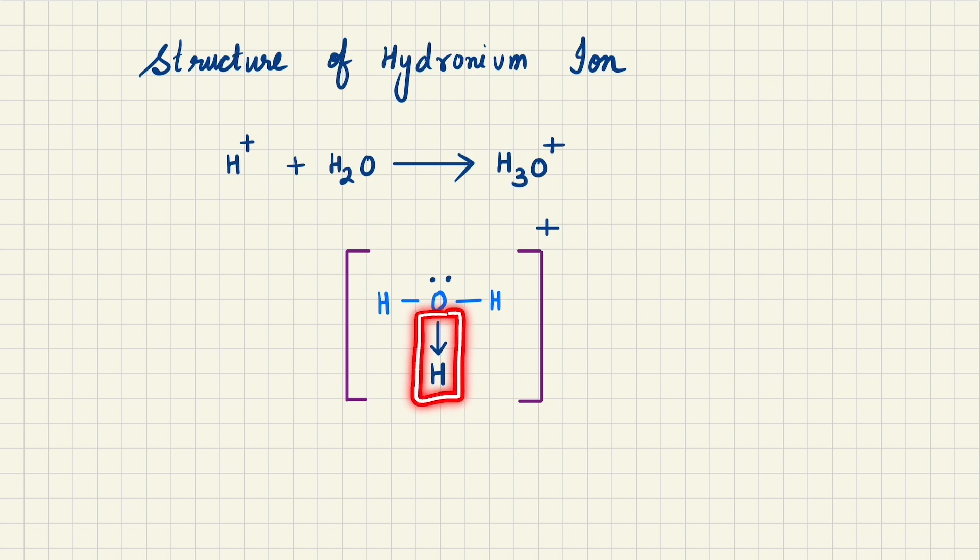Therefore, the bond formed between hydrogen and oxygen is a coordinate bond. Overall, there is a plus charge present here, and we know that a plus charge appears when electrons are completely donated from one system.